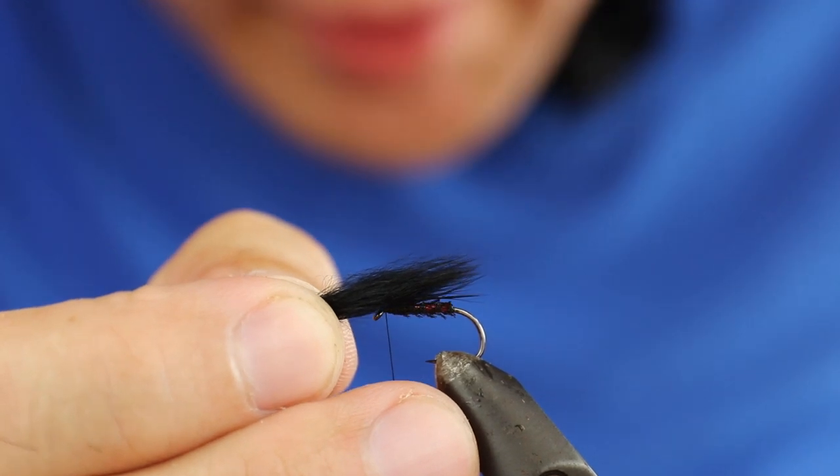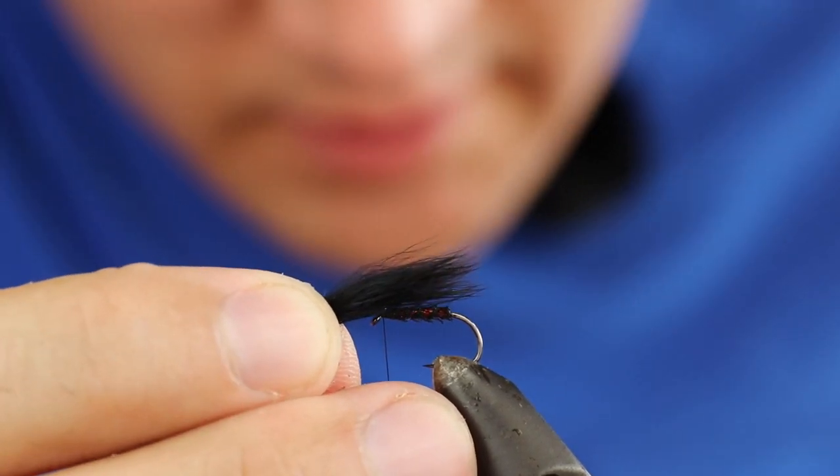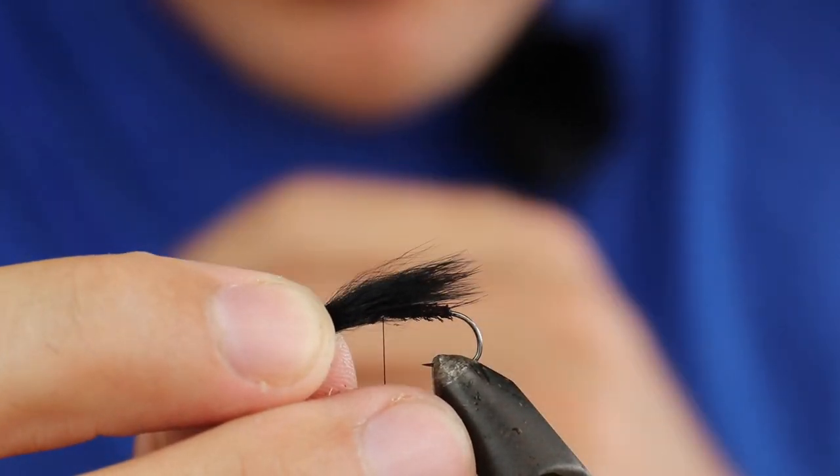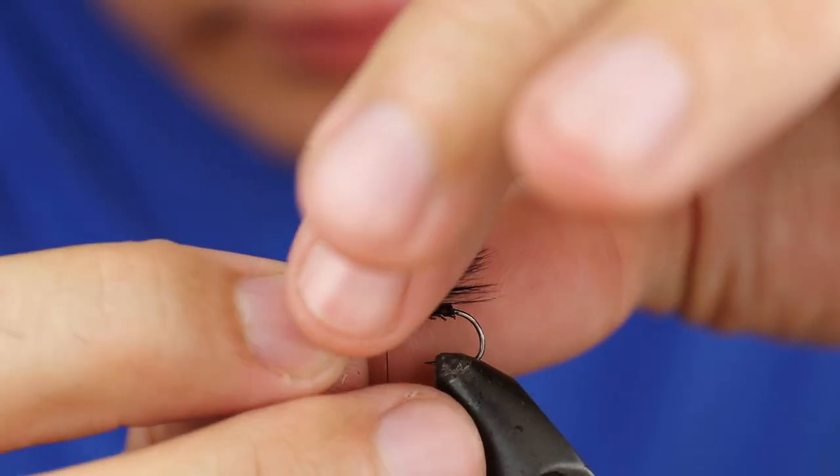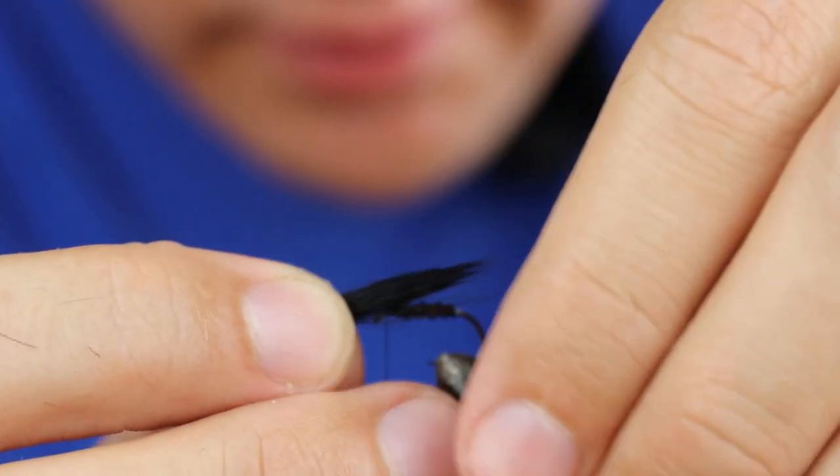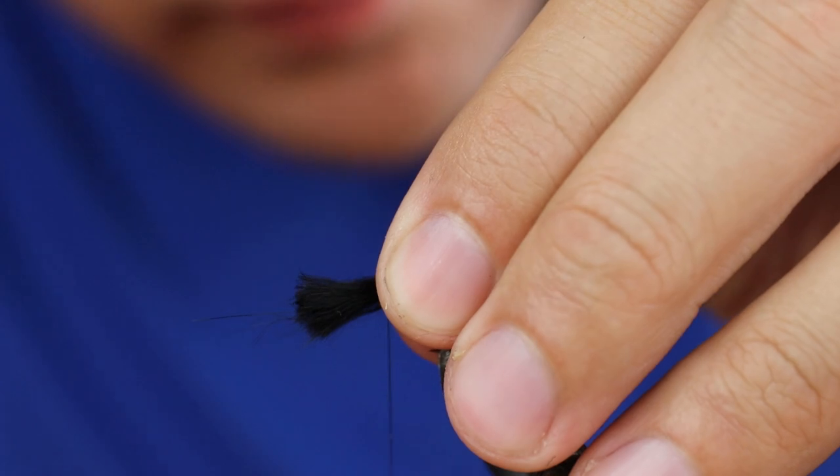Measure up and make sure you're happy with where the wing sits in terms of length. My personal preference is to not go beyond the bend of the hook. As long as I'm happy with that, streamline it a bit more to make it easier to tie in, and give it two or three turns.